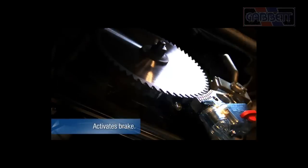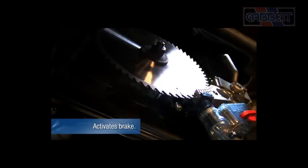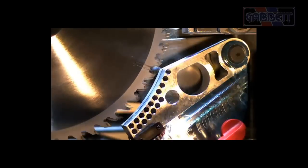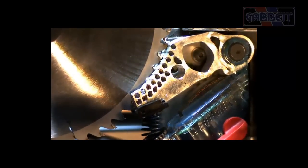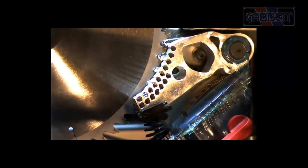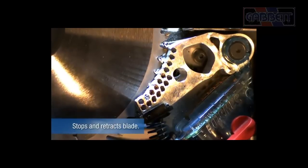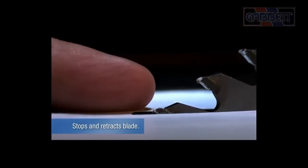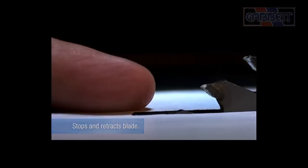This change in signal triggers a quick-release aluminum brake. A heavy-duty spring forces the brake into the teeth of the spinning blade. The teeth dig into the aluminum, stopping the blade cold. The blade's momentum forces it to retract below the table, and the motor is automatically shut off.